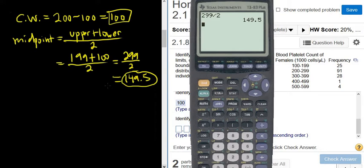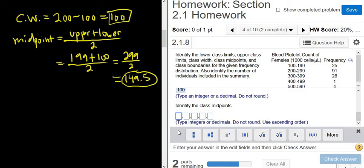Be careful. If you're putting it in your calculator all at once, you want to have it in parentheses. So parentheses, 199 plus 100, parentheses divided by 2. Very common mistake is people forget the parentheses. So really, really useful to have those there. Okay, let's try it. 149.5.